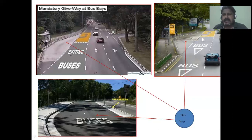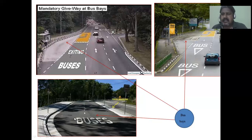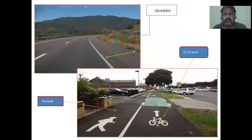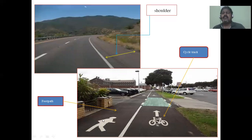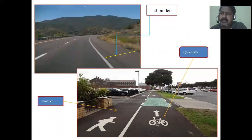Looking at examples: this is a bus bay where vehicles get out of the main lane and buses stay in the bay so passengers can board. This is the shoulder. This is the footpath for pedestrians, and this is the cycle track. Although the photographs are from foreign countries, similar infrastructure is now being developed in our country as well.